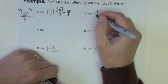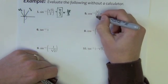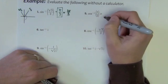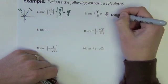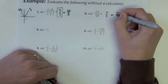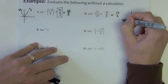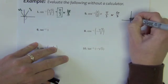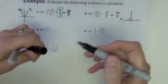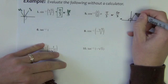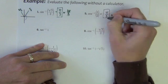Next one: cosine inverse of a half. Where on the circle does cosine have values of 1 half? Cosine is the x value, so I'm thinking x values of 1 half. I find x values of 1 half at pi over 3 or 5 pi over 3. Now for inverse cosine, we have to be on the top here, because we want to be from 0 to pi — that was our range for inverse cosine. Pi over 3 is there; 5 pi over 3 is down here. So we throw that one out, and pi over 3 is our answer.